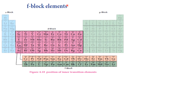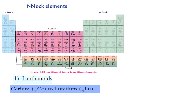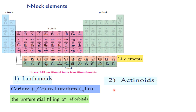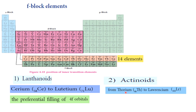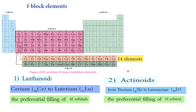The f-block elements include the lanthanoids and actinoids. In the f-block, the outermost electrons enter the f-orbitals, which are not the outermost shell but are inner orbitals. That is why they are also called inner transition elements, placed in a separate row below the main periodic table.